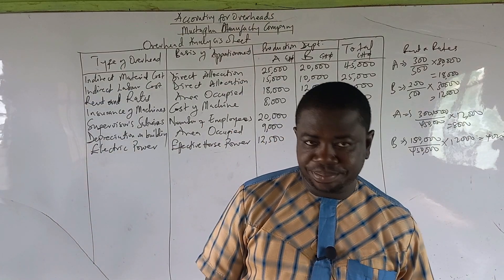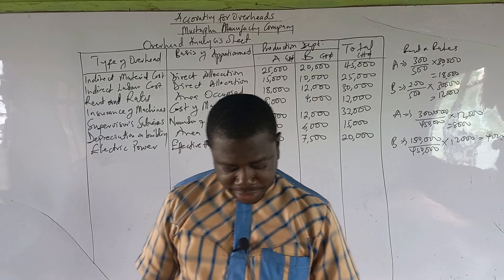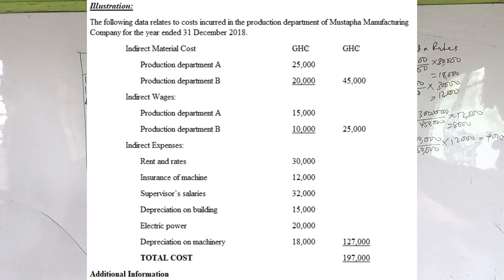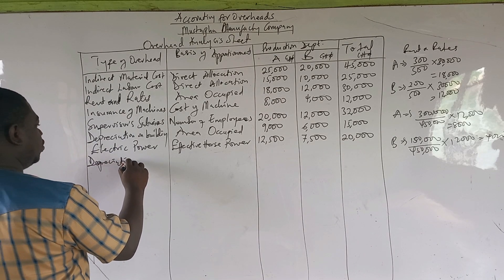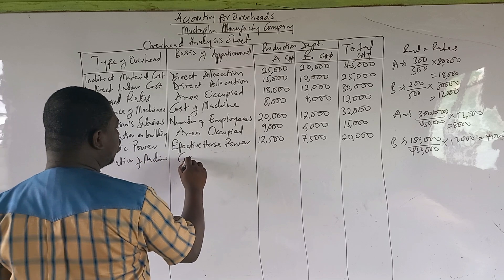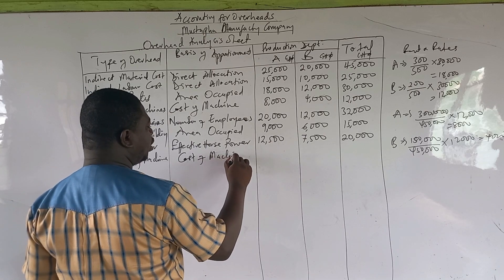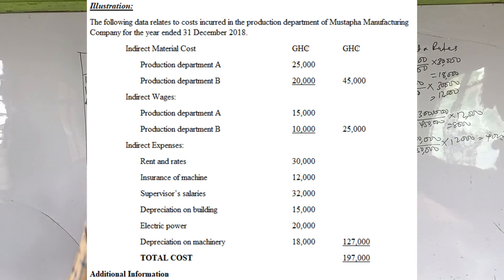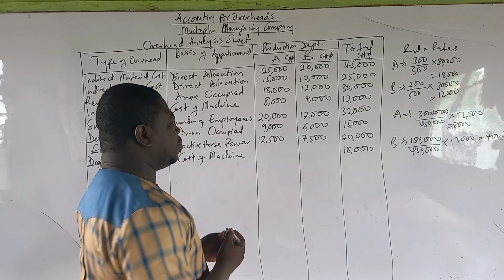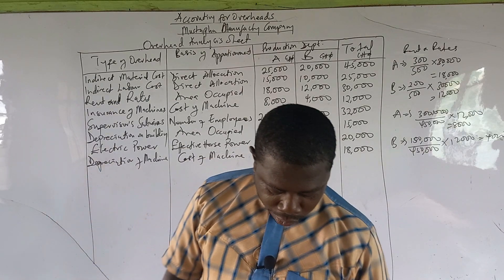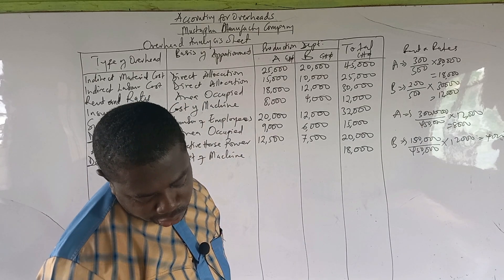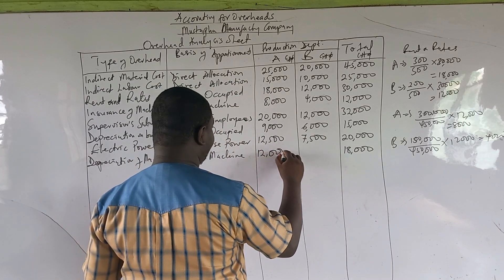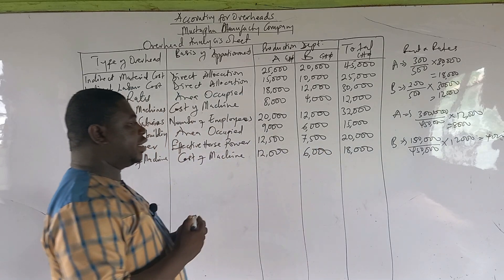The final indirect expense is depreciation of machinery: 18,000. The most appropriate basis is cost of the machine. Using the same ratio — 300,000 to 150,000 — Department A gets 12,000 and Department B gets 6,000, giving a total of 18,000.